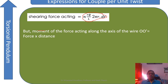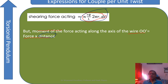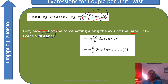The moment of the force acting on the wire in the direction of the axis OO' is force multiplied by the perpendicular distance. The perpendicular distance from the axis is r. So the moment of force = shear force × r = (ηφ/L) × 2πr³·dr. Therefore, moment of force = ηφ/L × 2πr³·dr.